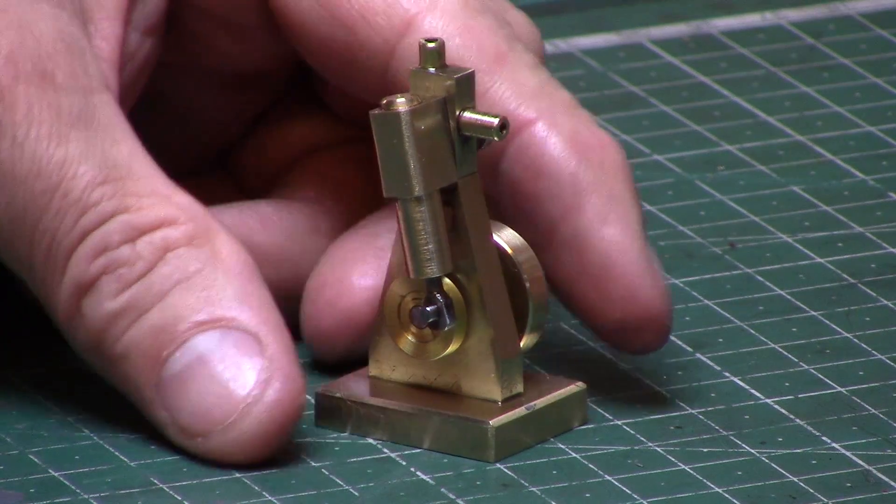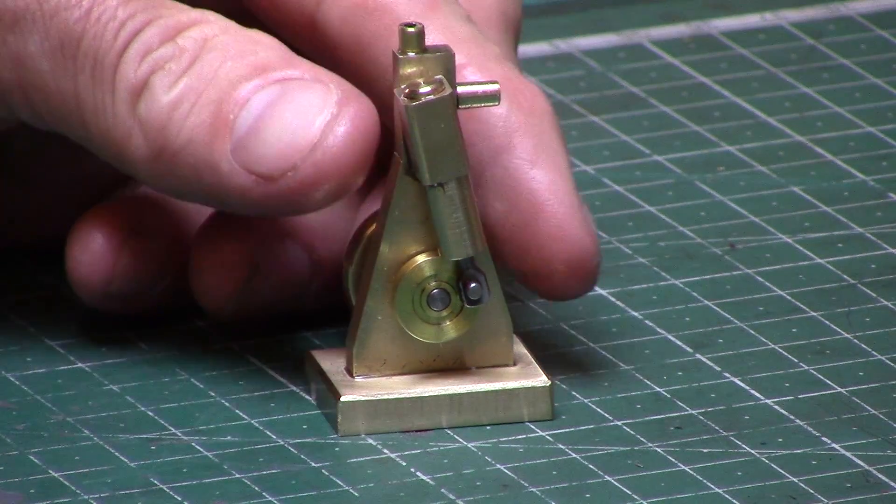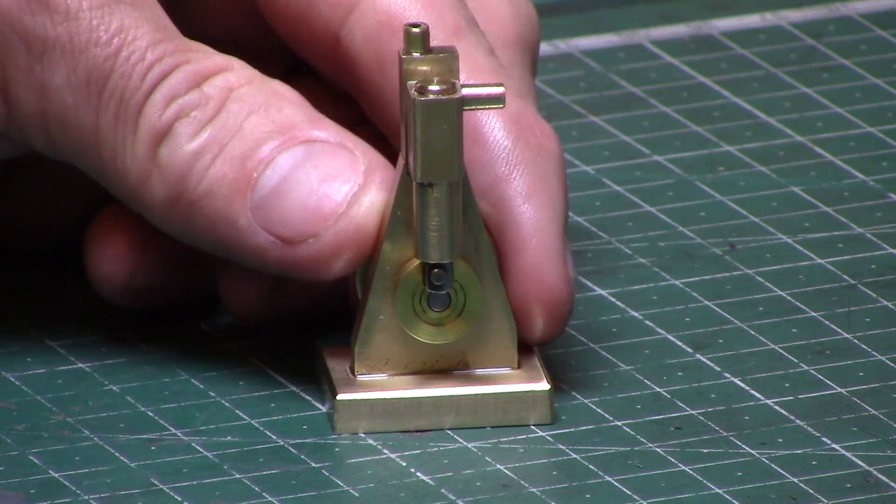The engine stands at a height of just 40 millimeters from the base, or approximately one and a half inches, and has been made almost entirely of brass stock.